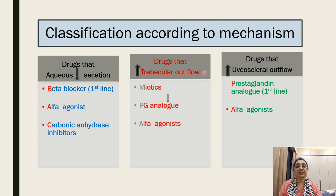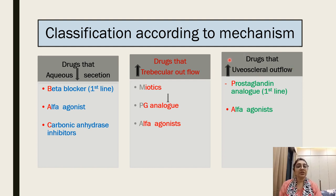The second group increases trabecular outflow — drugs are miotics, prostaglandins, and alpha agonists. The third group increases uveoscleral outflow — drugs are prostaglandin analogs and alpha agonists.